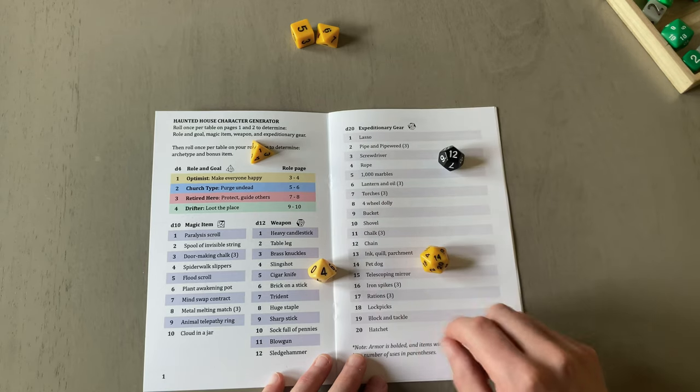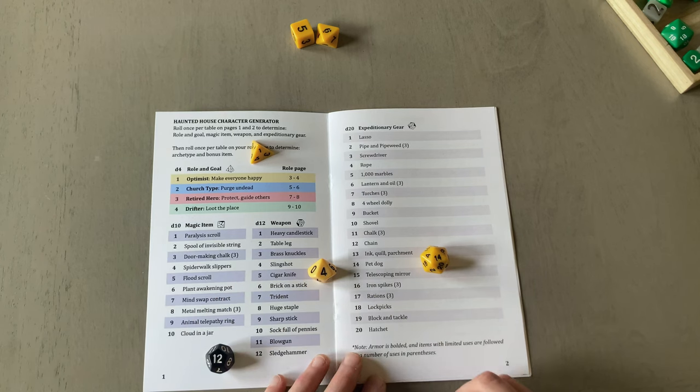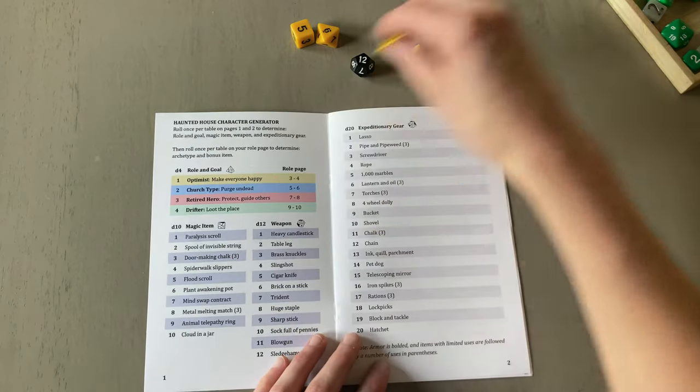Expeditionary gear, 14. A pet dog. I like to have that. And magic item 12 is a cloud in a jar. So I end up with my pet dog, my slingshot, my cloud in a jar, and trying to make everyone happy.